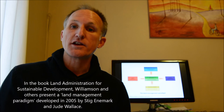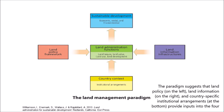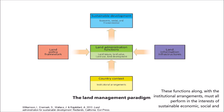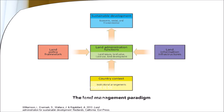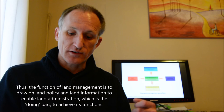In the book Land Administration for Sustainable Development, Williamson and others present a land management paradigm developed in 2005 by Stig Ennemark and Jude Wallace. The paradigm suggests that land policy on the left, land information on the right and country-specific institutional arrangements at the bottom provide inputs into the four land administration functions in the middle, namely land tenure, land value, land use and land development. These functions along with institutional arrangements must all perform in the interests of sustainable economic, social and environmental development, which is at the top of the diagram. Thus the function of land administration is to draw on land policy and land information to enable land administration, which is the doing part, to achieve its functions.